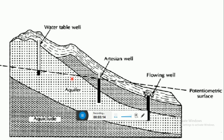As discussed, this is the potentiometric surface. In the case of the artesian well, the potentiometric surface is below the ground surface. But in the case of the flowing well, the potentiometric surface is above the ground surface, so water flows because the water pressure is greater than the atmospheric pressure. In the artesian well, water pressure equals atmospheric pressure.